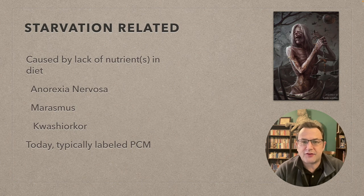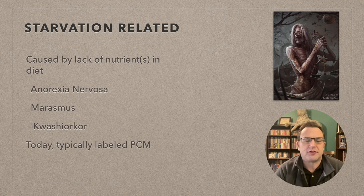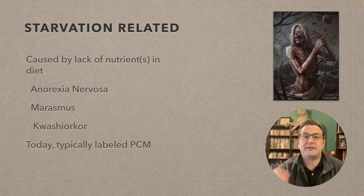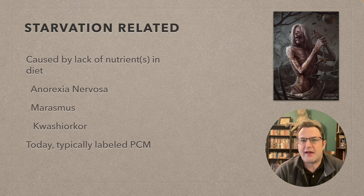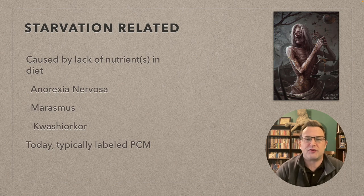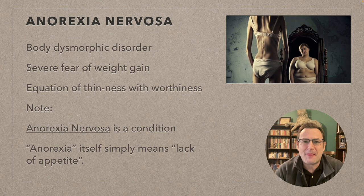We'll start with starvation-related, which is caused by lack of nutrients in the diet. Examples include anorexia nervosa, marasmus, and kwashiorkor. Typically today I don't see a diagnosis written as marasmus — I've seen it once, noted by a new physician's assistant who was excited to use the term. Normally you're going to see PCM — protein-calorie malnutrition.